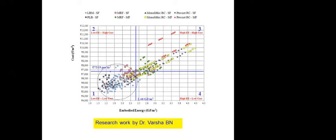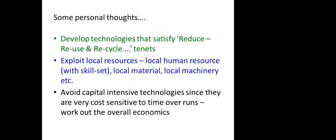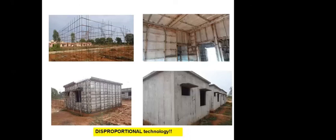Most of the building typologies in Varsha's study that achieved low cost and energy belong to the class of load-bearing masonry systems — indicating that it is truly sustainable. Masonry has got a lot of potential for sustainable construction practices. I see unfortunate single-story buildings being constructed in concrete, which is a pity, because the same job can be done with masonry with probably one-tenth the cost. There are a lot of government-sponsored projects done this way which I feel is incorrect. Monolithic concrete has its own role for multi-story buildings, but I call this a disproportionate technology: use masonry wherever possible, use concrete wherever needed, use steel wherever needed.